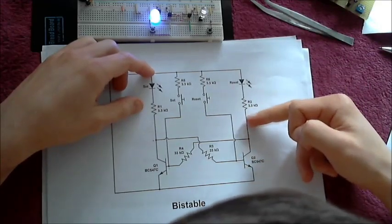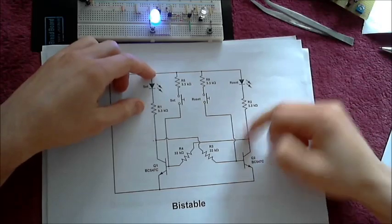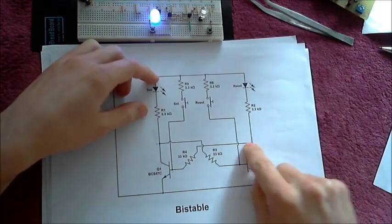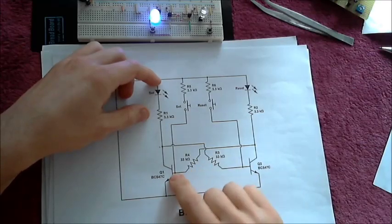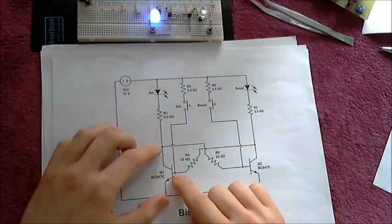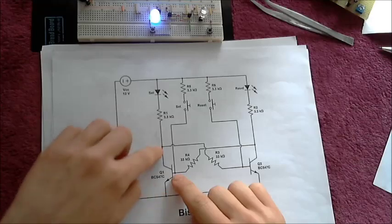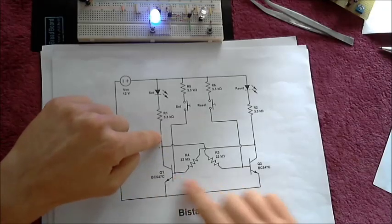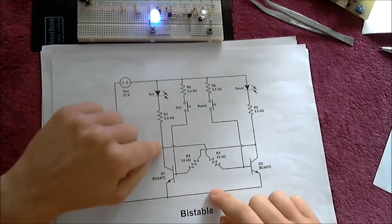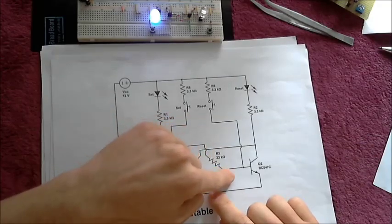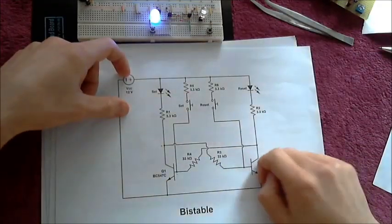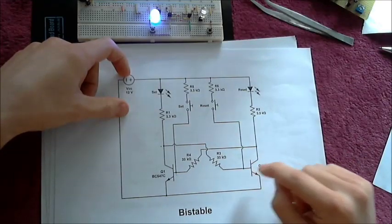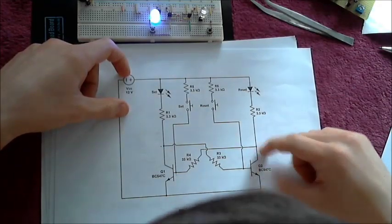This transistor turns on and the collector goes low for a moment. When the collector goes low, you can see that less current is supplied to the base of Q1, which means that transistor starts shutting down. Then the collector starts going high, and when the collector starts going high, more current is going to be supplied to this base, which turns this transistor even more on.